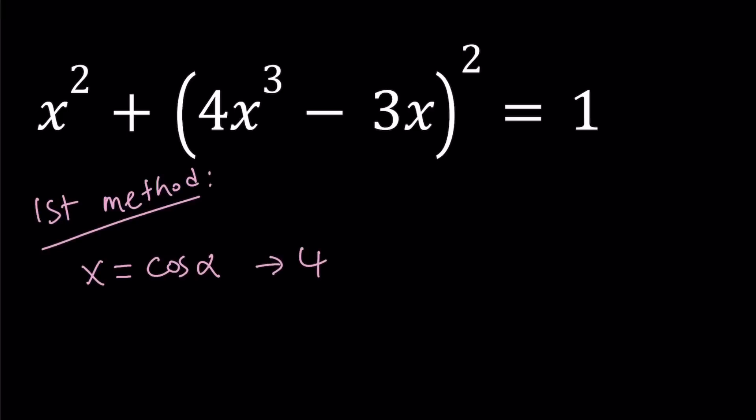then 4x cubed minus 3x is just going to be 4 cosine cubed alpha minus 3 cosine alpha, which is the same as cosine of 3 alpha.